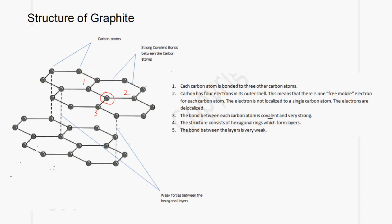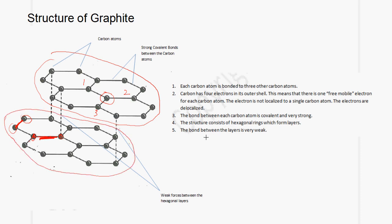The bond between each carbon atom is covalent and very strong. Between carbon and carbon there is a strong covalent bond. The structure consists of hexagonal rings which form layers — we have one layer here and a second layer here. The bonds between the layers are very weak, and these dash lines represent those weak bonds, which are referred to as van der Waals forces.